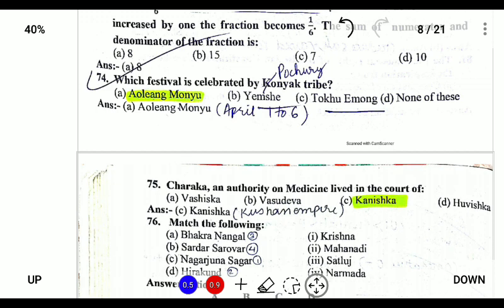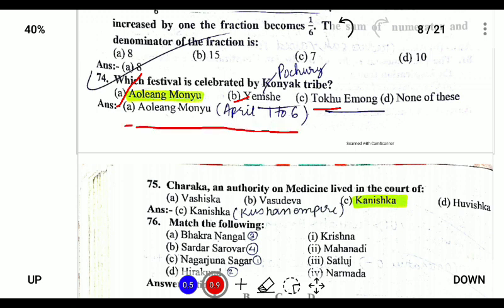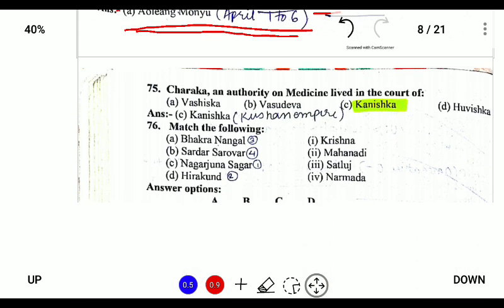The festival celebrated by the Konyak tribe is Aoleng Monyu. Yamshi is celebrated by the Pochuri tribe. Tokhu Emong is the Lotha festival. Aoleng is celebrated between 1st April to 6th April.